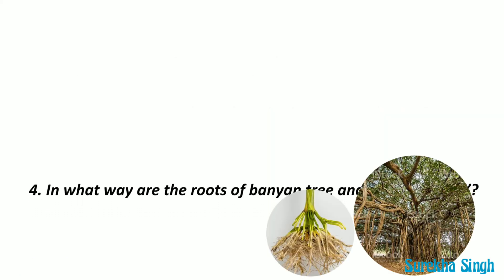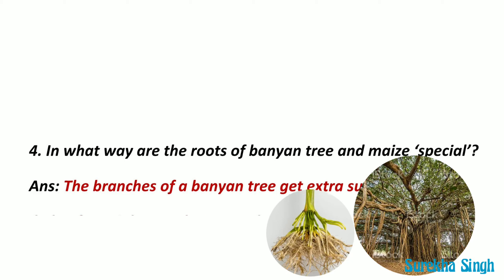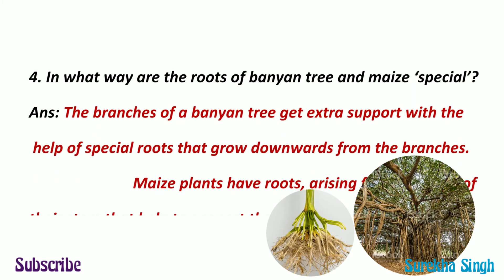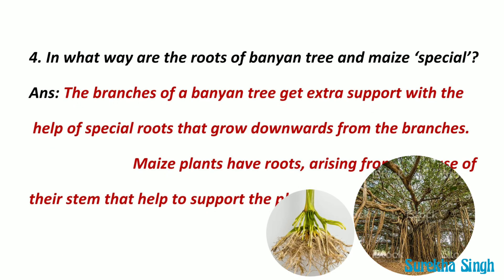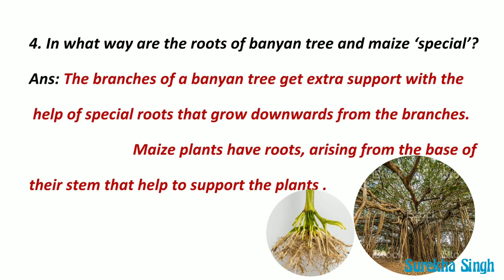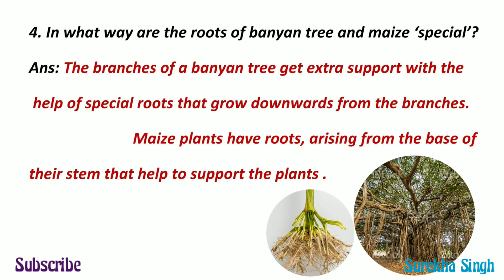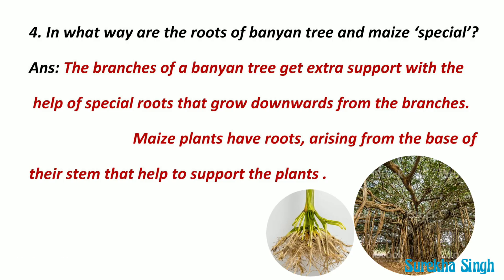Question 4: In what way are the roots of Banyan tree and maize special? The roots of Banyan tree and maize are special. The branches of a Banyan tree get extra support with the help of special roots that grow downwards from the branches. Maize plants have roots arising from the base of their stem. These roots provide support and keep the plant erect.